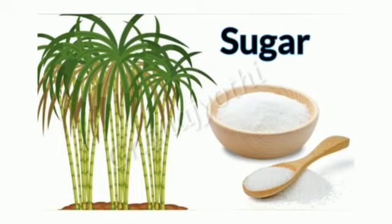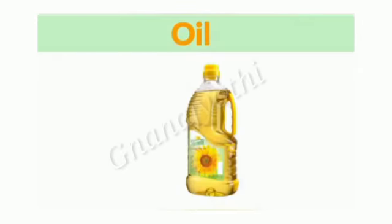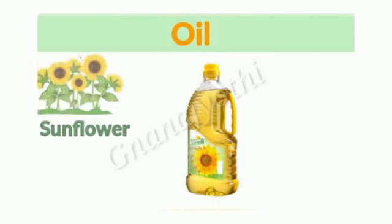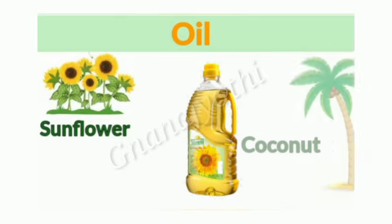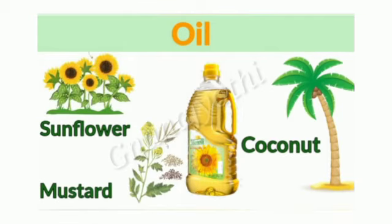We also get spices from plants. Next is sugar, from sugarcane juice. Next is oil — we get oil from sunflower, coconut, and mustard, etc.